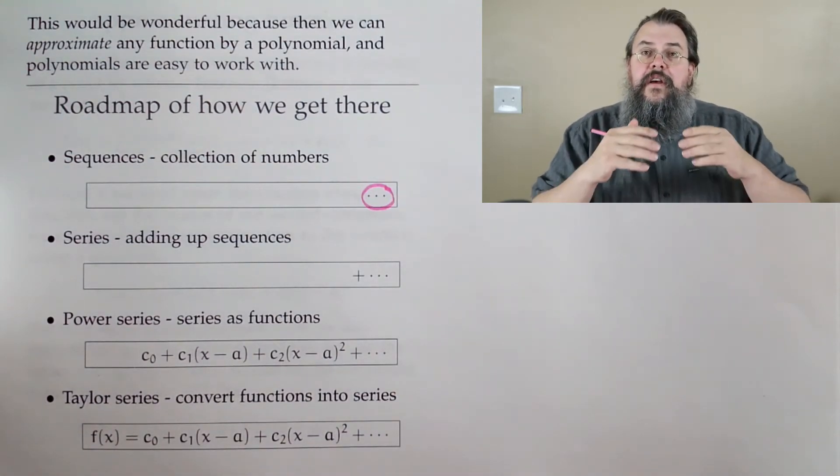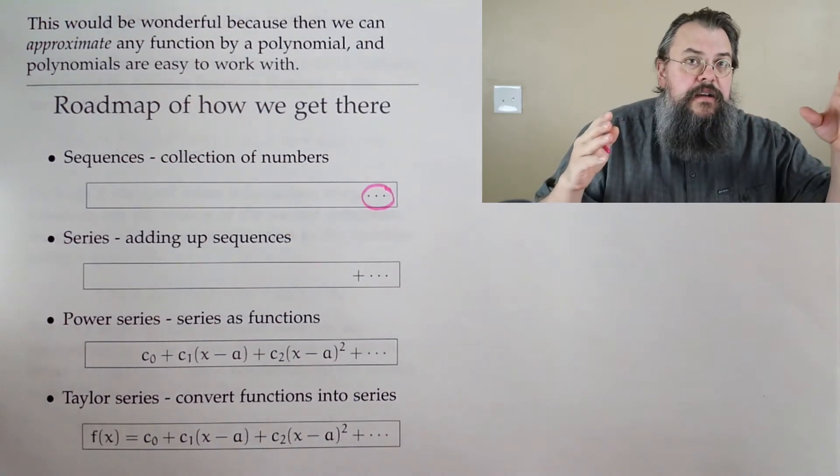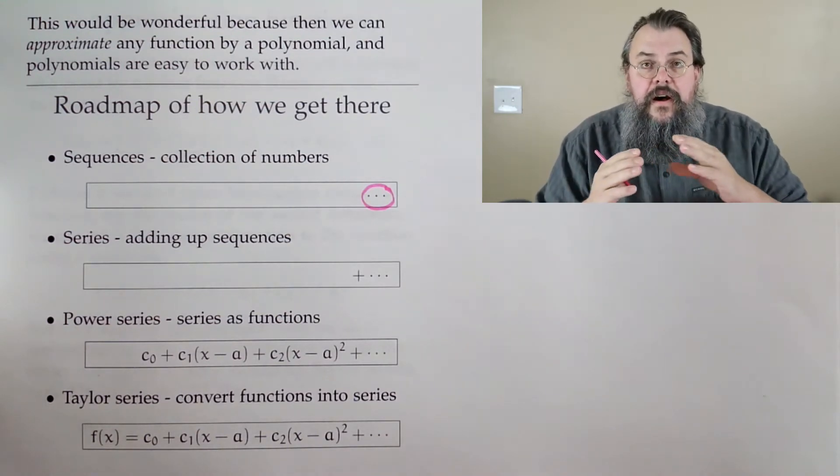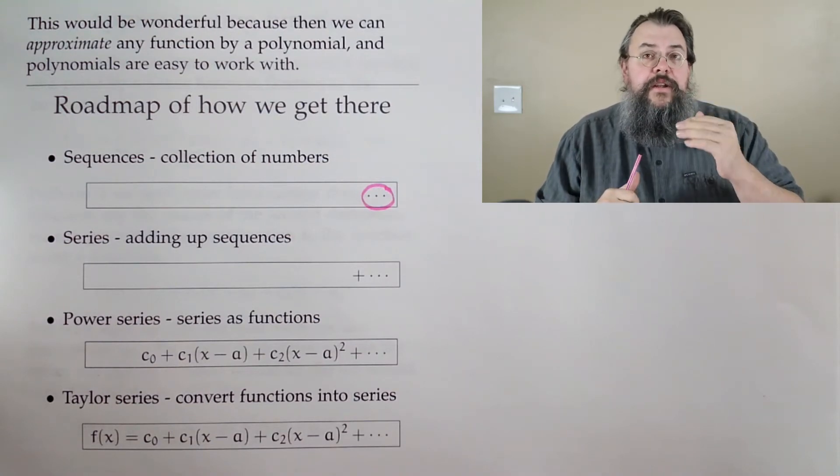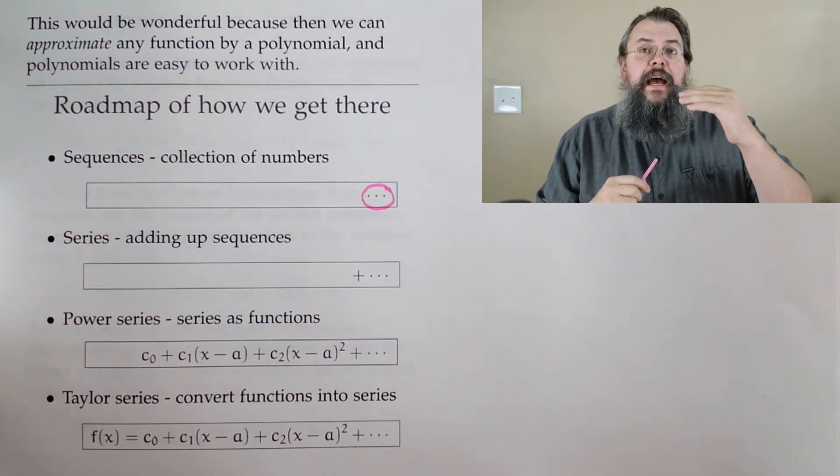dot dot dot is the standard for saying the pattern continues. So right now, the dot dot says, I have this long list of numbers. A long list of values.